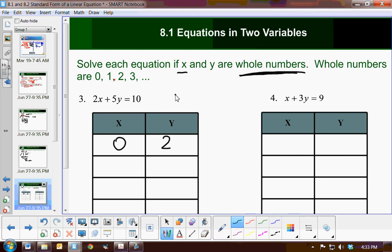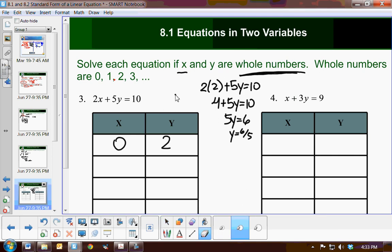Now we have to try 2. 2 times 2 plus 5y equals 10. Now I'm going to go a little quicker through this. 4 plus 5y equals 10. Subtract 4 from both sides. 5y equals 6. And we can see right away 6/5 is not a whole number. So therefore, when x is 2, I do not get a whole number solution for y.